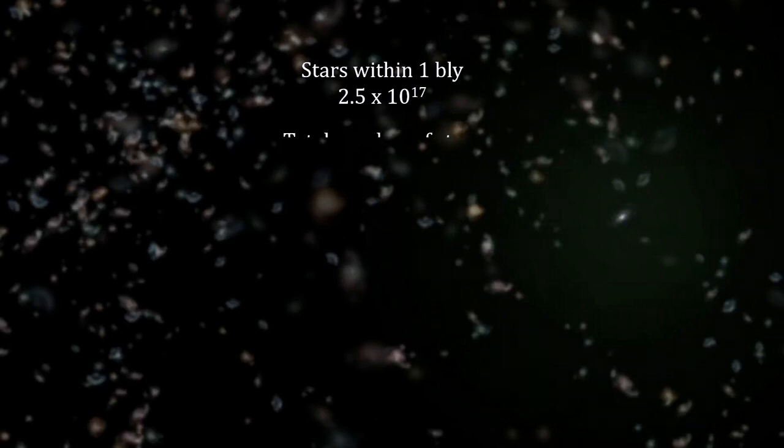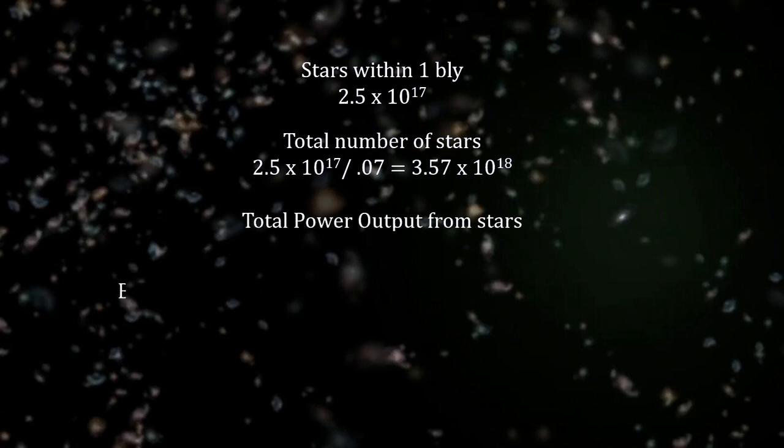This represented around 7% of the total number of stars in the universe. We get the total power emitted by all the stars in the visible universe by multiplying the average watts per star times the number of stars.